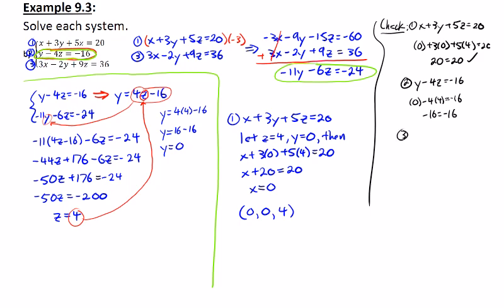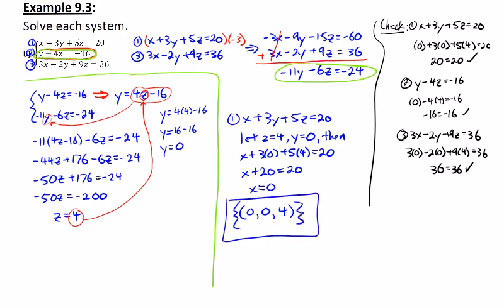And the final check with 3x minus 2y plus 9z equal to 36. 3 times 0 minus 2 times 0 plus 9 times 4. And sure enough, 36 equals 36. They all three check. So therefore, my solution is the ordered triple 0, 0, 4. And we'll box it in.